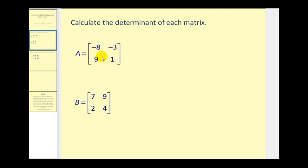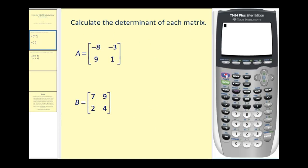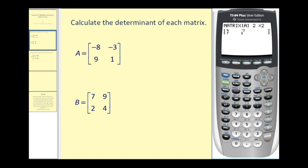Let's say we want to find the determinant of these two matrices. The first thing we need to do is enter these matrices into the calculator. So if we press second matrix, go over to the edit menu — right arrow twice — and press enter for matrix A. It's a two by two. We just enter in the elements: negative eight, negative three, nine, and one.